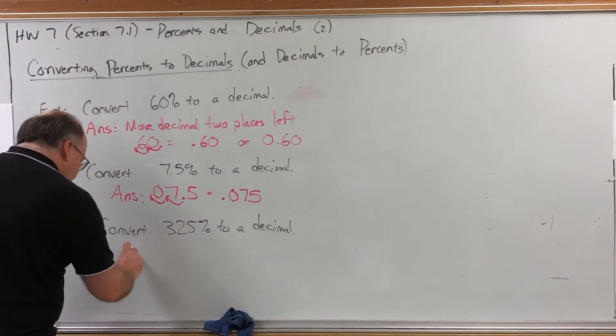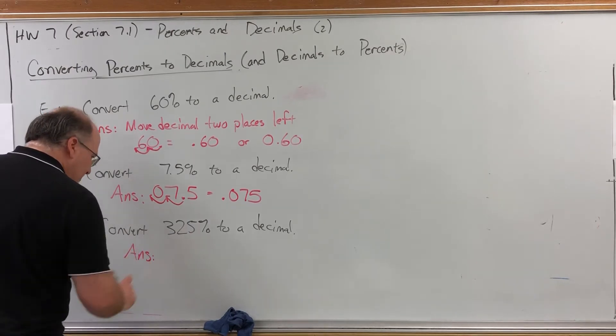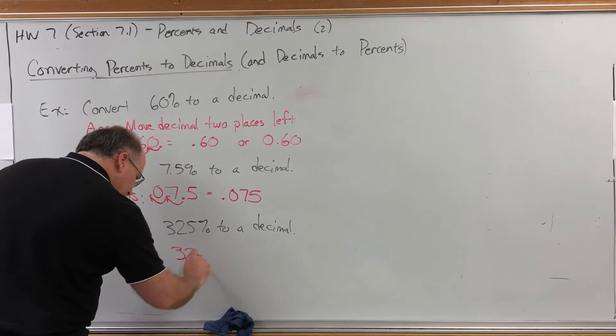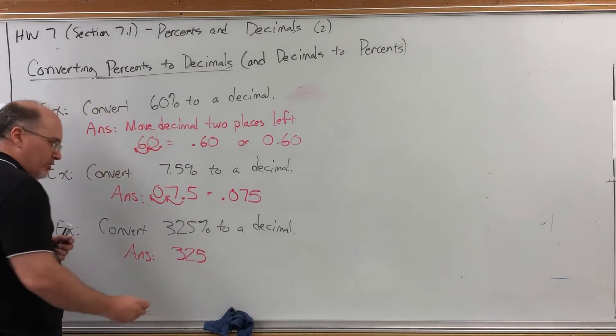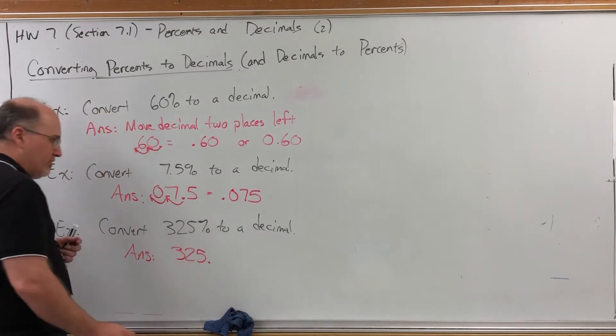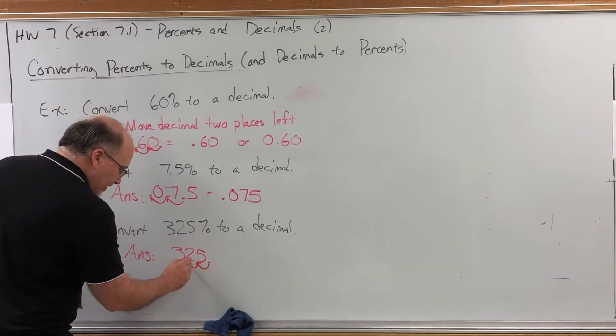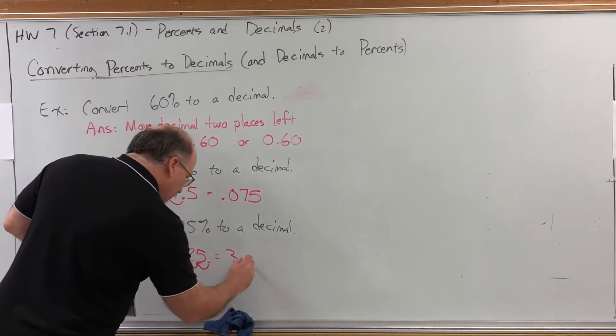And if your number has more than two digits, that just means the decimal won't make it all the way to the left of the number. To convert 325% to a decimal, the decimal was originally at the right of the five. So if we move it two places to the left, we get 3.25.